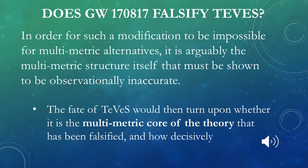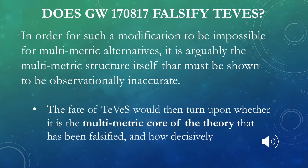Such adjustments might be less well-placed for theories purporting to be fundamental. For example, if this result showed different speeds for gravitational waves and photons, it would be difficult to reconcile with GR, since the same speed is a direct prediction with no room to maneuver. So it seems that for a body of evidence to be disconfirming for an effective theory like TeVeS, what must be shown is that the core structure of the theory itself needs modification — such that no adjustment in a successor even reminiscent of the original could meet the challenge. For multi-metric alternatives like TeVeS, it is arguably the multi-metric structure itself that must be shown to be observationally inaccurate.